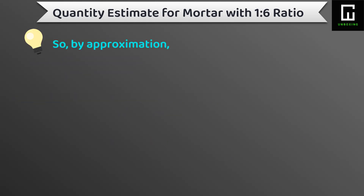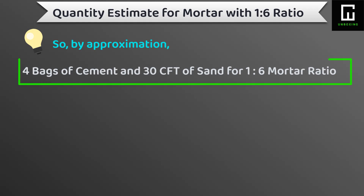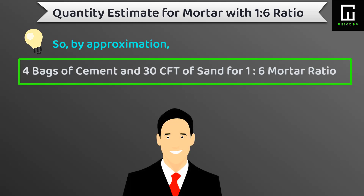By approximation, we can say that for 1 cubic meter of brickwork with a 240mm thick wall, the requirement is 4 bags of cement and 30 cubic feet of sand for a ratio of 1:6 cement mortar.